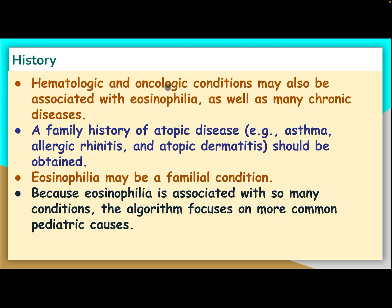Hematologic and oncological conditions may also be associated with eosinophilia, as well as many chronic diseases. A family history of atopic disease — asthma, allergic rhinitis, and atopic dermatitis — should be obtained. Eosinophilia may be a familial condition. Because eosinophilia is associated with so many conditions, an algorithm focused on more common pediatric causes is helpful.